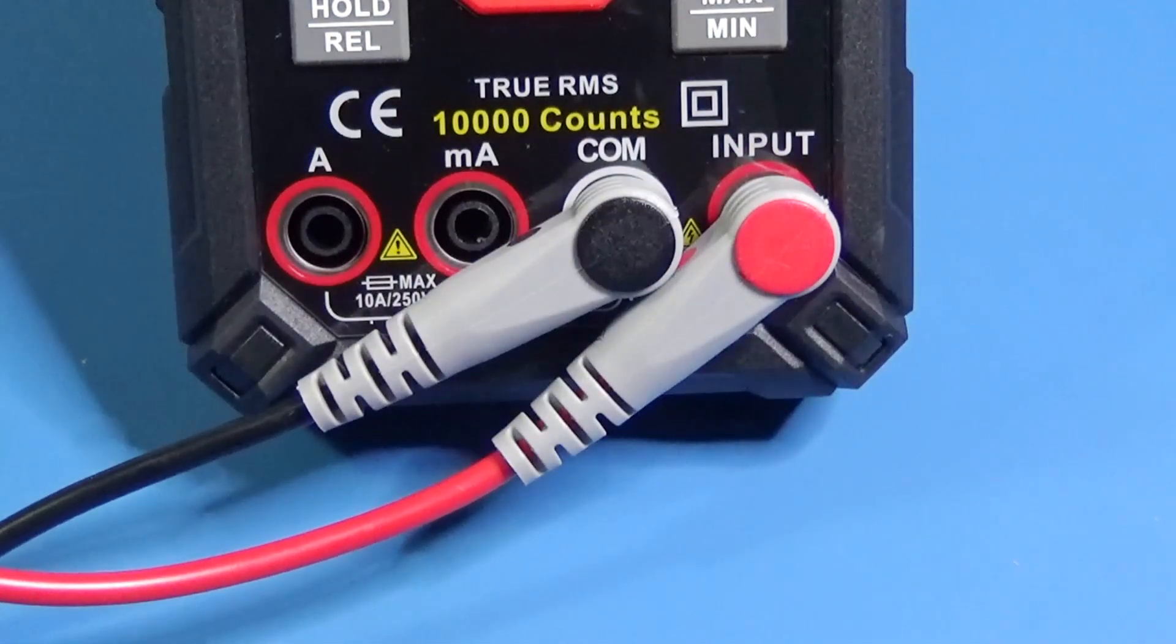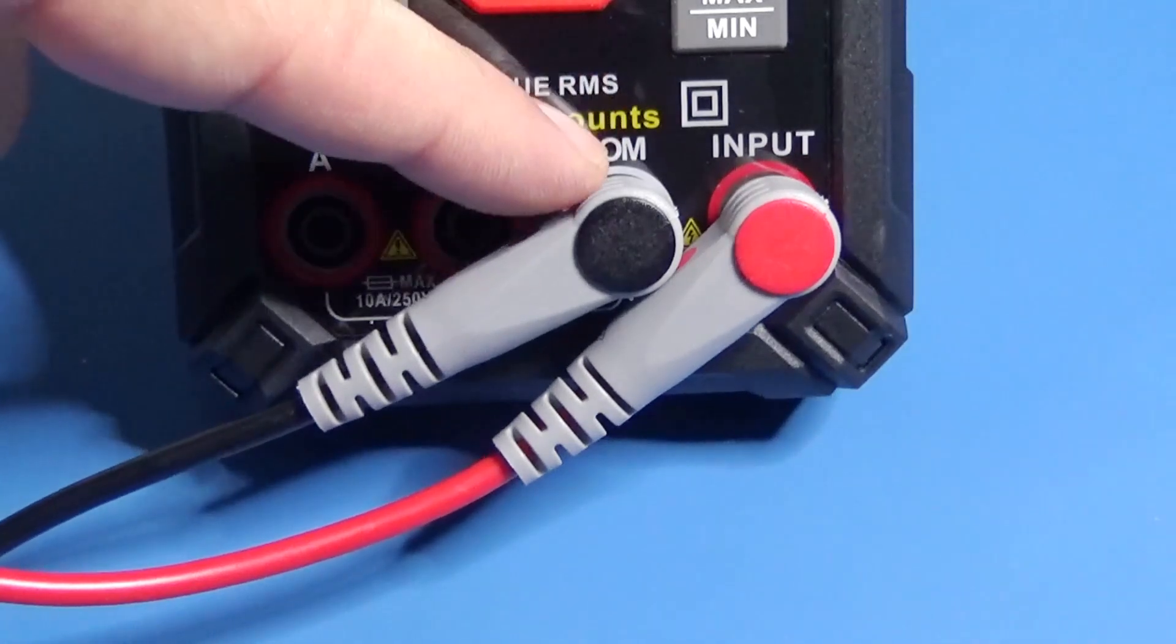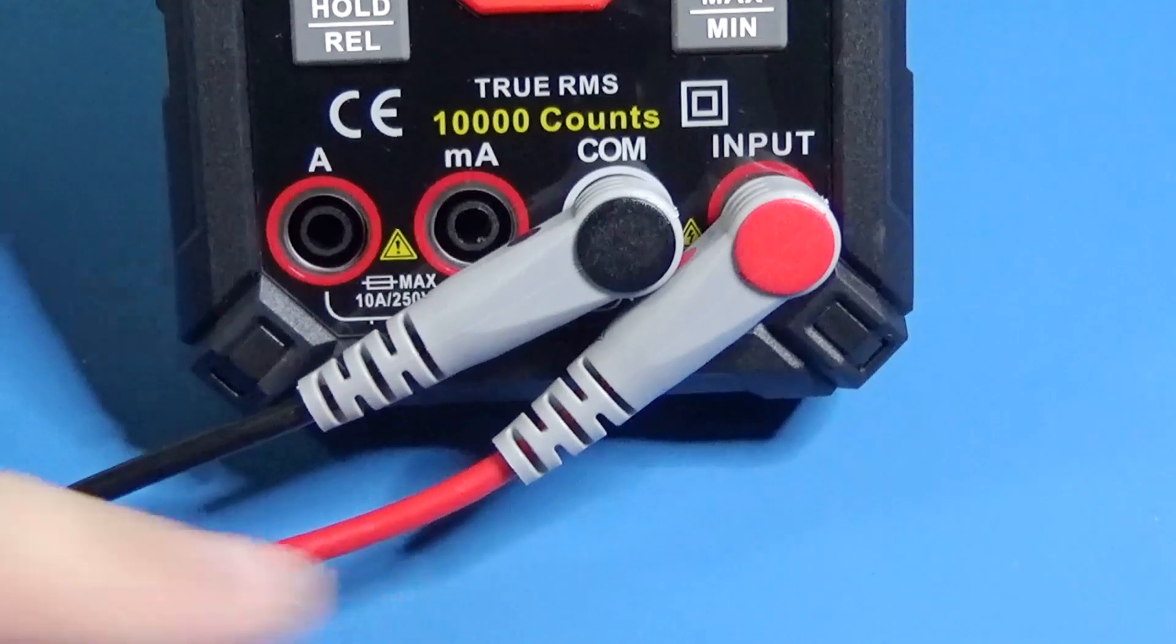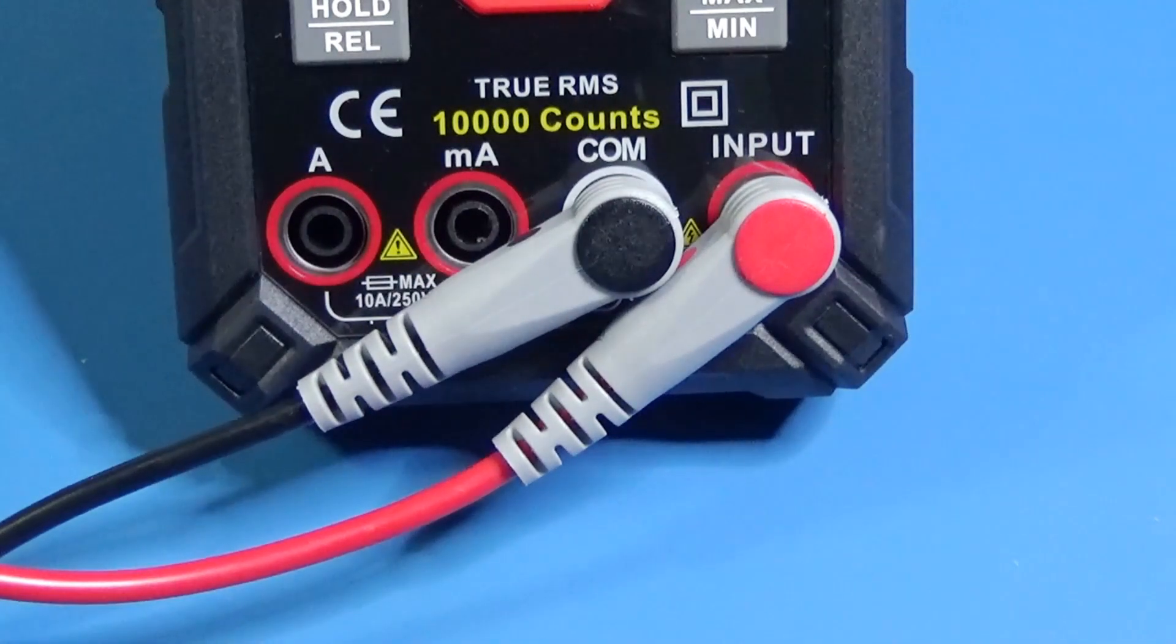And yes, one of the improvements you asked for was to put the banana connectors in front of the multimeter and not underneath. So the company did it.